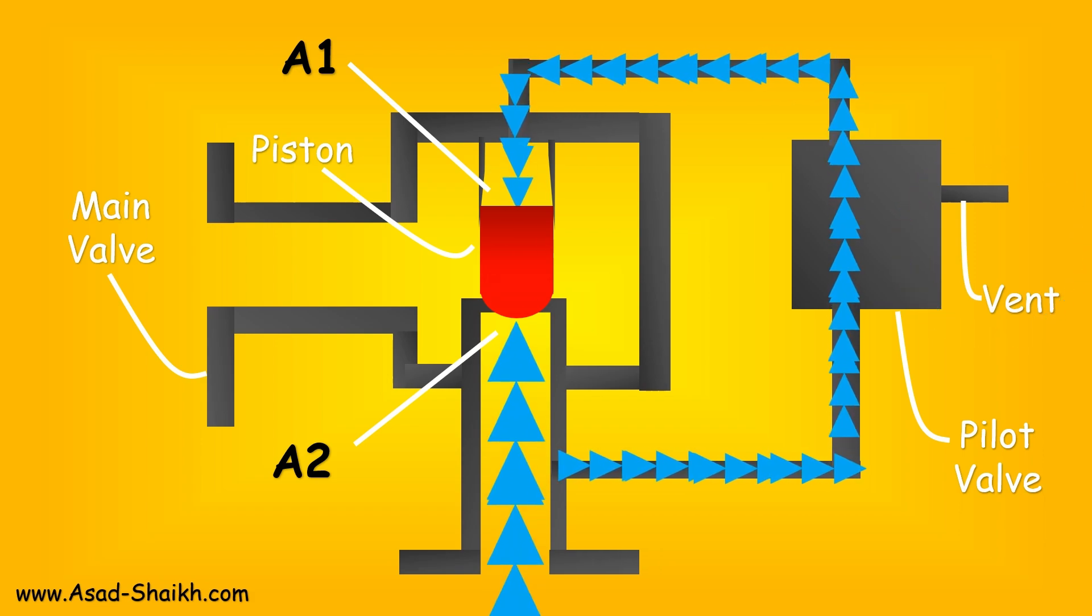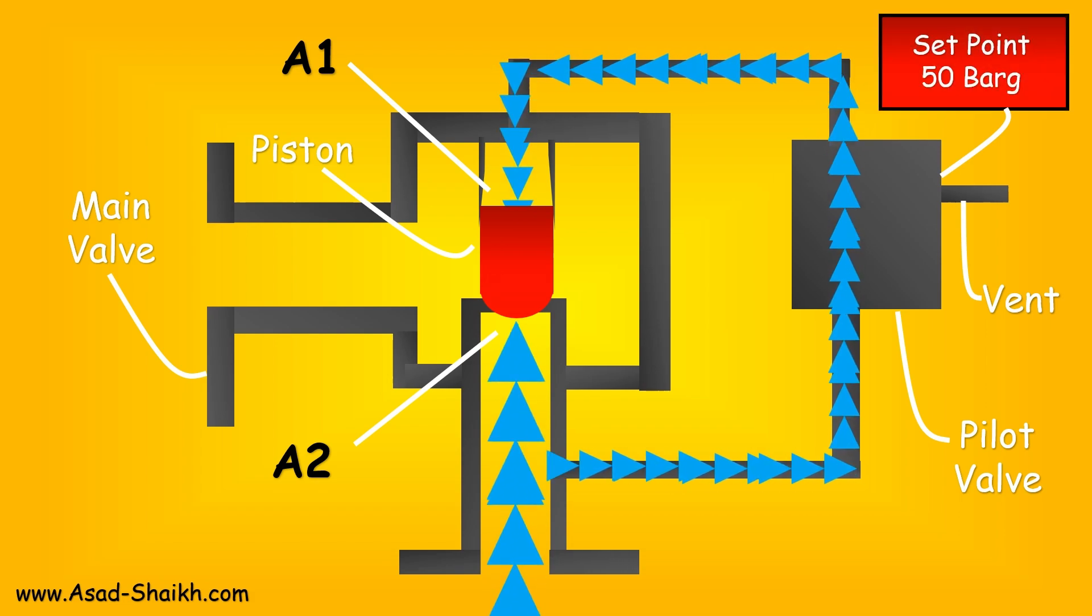Let us take an actual project scenario. So let's imagine that this valve is set for 50 bar of pressure gauge. Basically, if the inlet pressure is just 20 bar, what is going to happen?